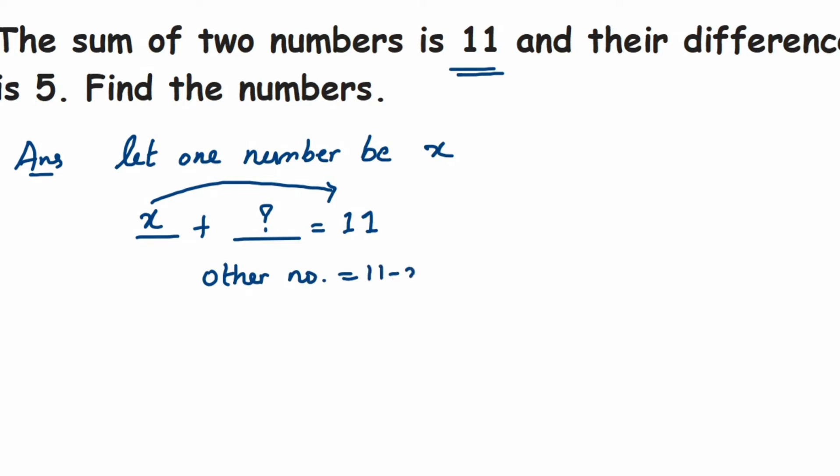Now one more relation they have given is the difference is 5. That is when you subtract these two numbers we're getting a 5. So we'll write down that. So difference of these two numbers, so we'll take 11 minus x minus x is equal to 5.